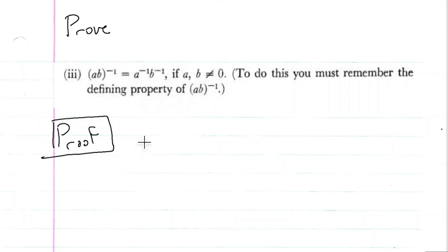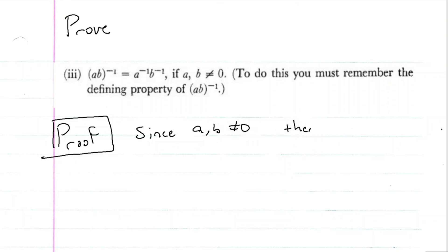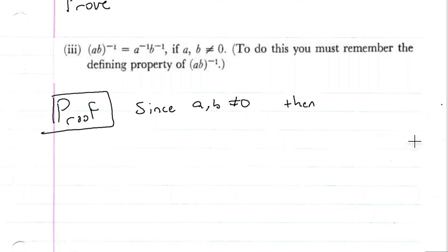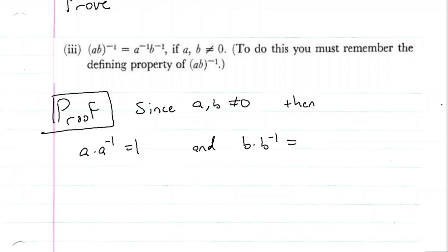In order to do this we need to determine what it means for something to be an inverse. We have this property where a and b are not equal to zero, so since a and b are not equal to zero, they have multiplicative inverses. This means that a times its inverse is equal to one, and b times its inverse is equal to one.